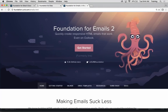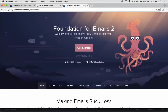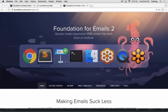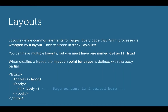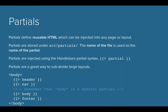Partials are to be used for repeated components. Things like your header navigation and your footer are obvious places where you'd create partials. I'm going to jump over and give you some real examples from a real project.